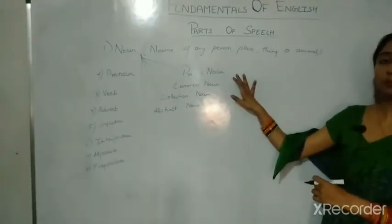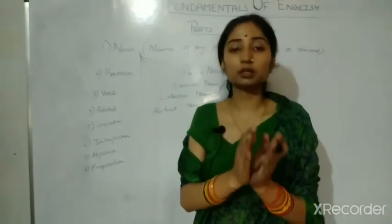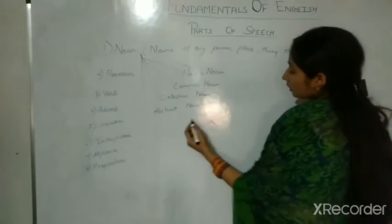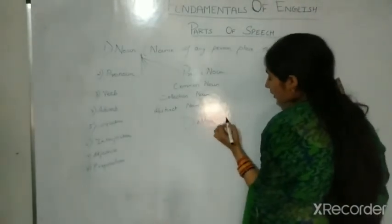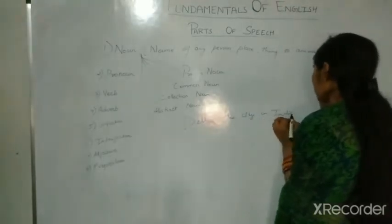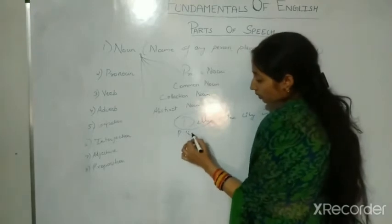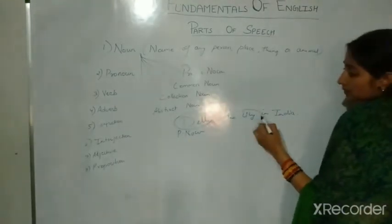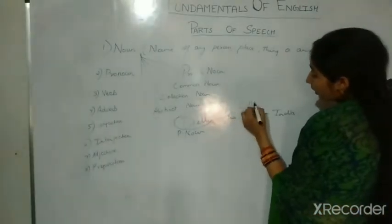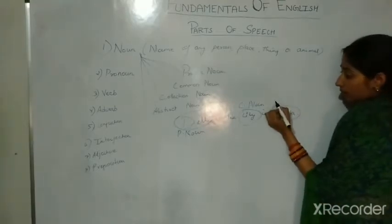First we will talk about proper noun. A proper noun is the name given to a particular person or any particular thing. For example, Delhi is a city in India. Delhi is the name given to a particular city, so Delhi is a proper noun. City can be any city, so city is a common noun. India is the name given to a particular country, so India is also a proper noun.